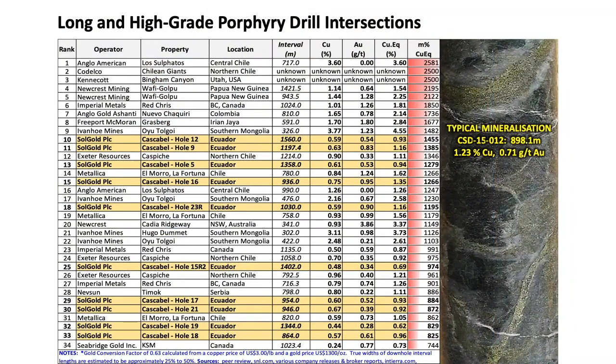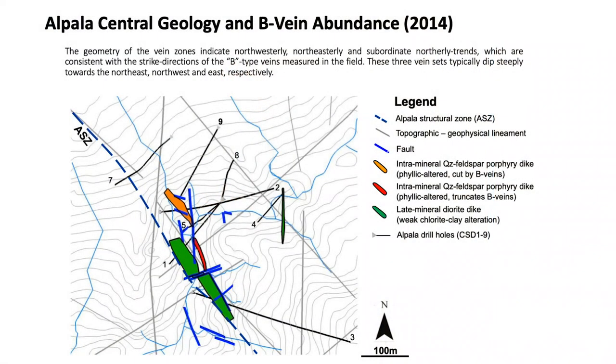There are good drill results — some of the best being one and a half kilometers at 0.6% copper and 0.5 grams gold, putting Alpala among the best deposits of all time. It's a pretty big porphyry with a 1.5 kilometer vertical ore column, like Grasberg — those sorts of very tall, metal-rich systems.